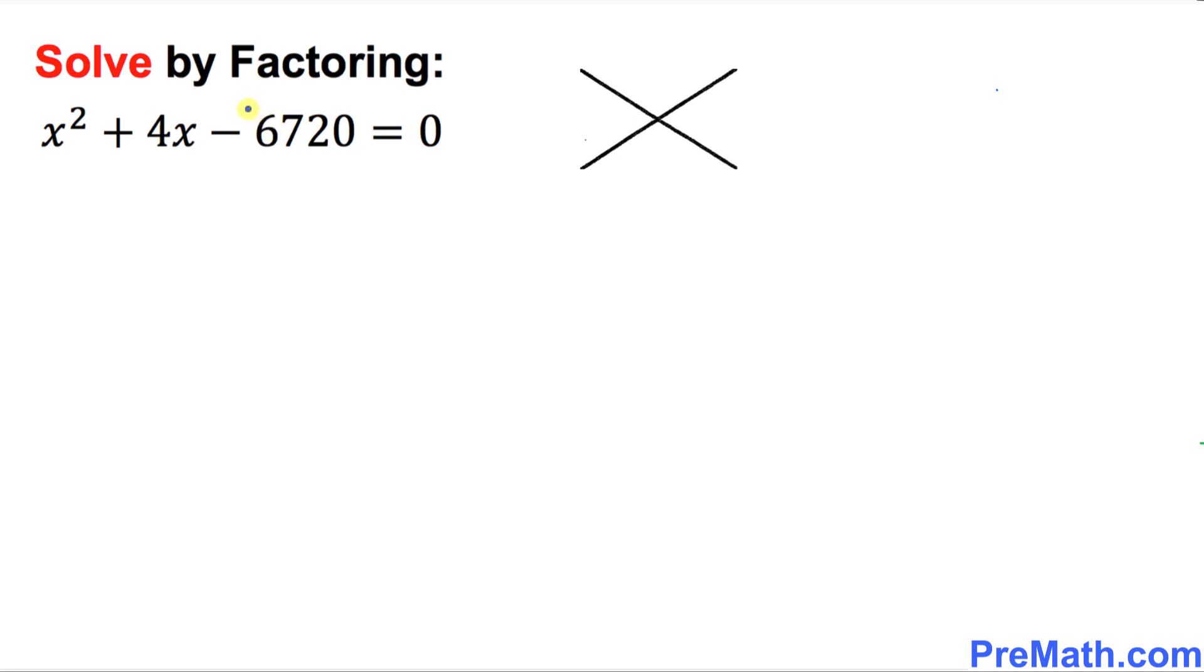The first step is to write down the constant term on top of this X factor. So negative 6720 goes on the top, and this middle number, positive 4, is going to go at the bottom of this X factor. We are only interested in this part.